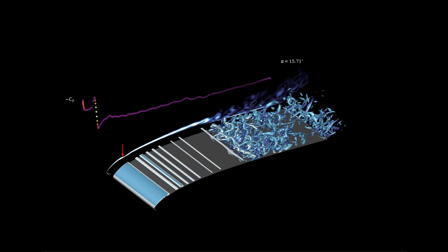The laminar reattachment of the bubble makes it more susceptible to disturbances. Almost immediately after the bubble is formed, large viscous TS instabilities begin to develop at the rear of the bubble. Simultaneously, the Kelvin-Helmholtz instabilities in the shear layer are also amplified, as seen from the appearance of vortex cores in the Q-criterion isosurfaces.